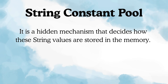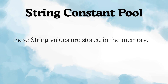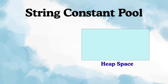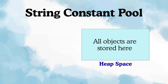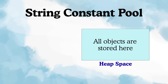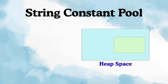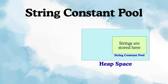To understand everything smoothly, we need to learn something called the string constant pool. It is a hidden mechanism that decides how string values are stored in memory. In Java, we have heap memory — that is where all the objects are stored. Now inside this heap memory, Java has given us another special space, a small dedicated area called the string constant pool or string literal pool, and this pool is dedicated only for strings.